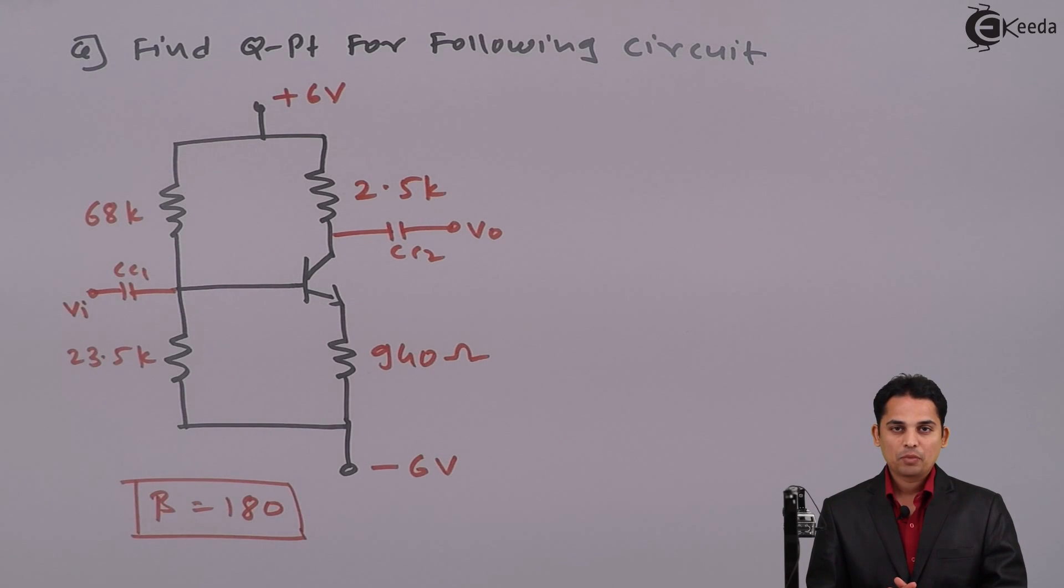Now in the exam they have asked you to calculate Q point for the following circuit. The very first step is to observe the circuit. So we will observe the circuit while observing we will come to know certain points in the circuit.